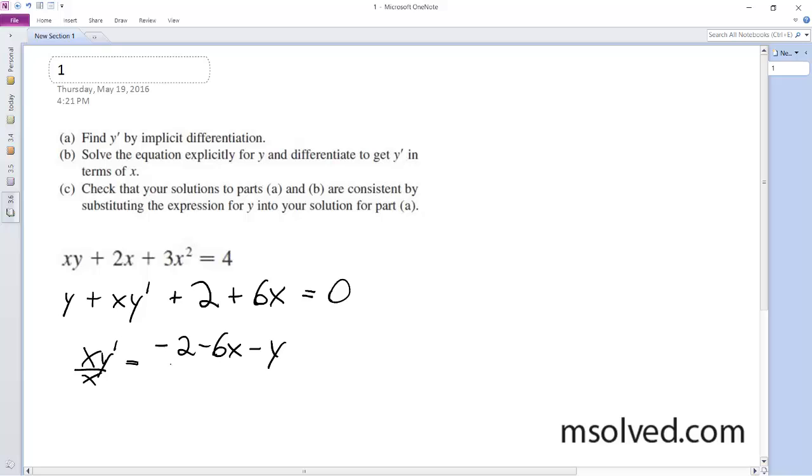And then I'm going to divide through by x. So here's our implicit differentiation. So y prime is equal to negative 2 minus 6x minus y divided by x.